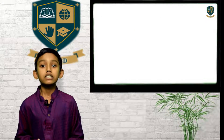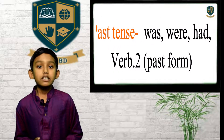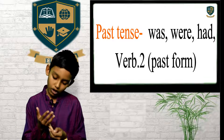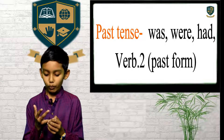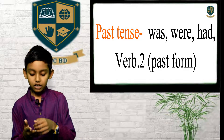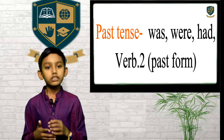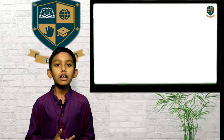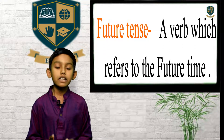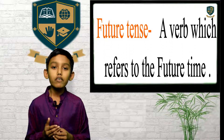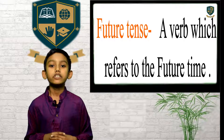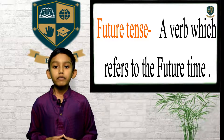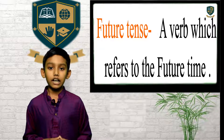The past symbols are was, were, had, were, to. Future tense means a verb which refers to the future time.